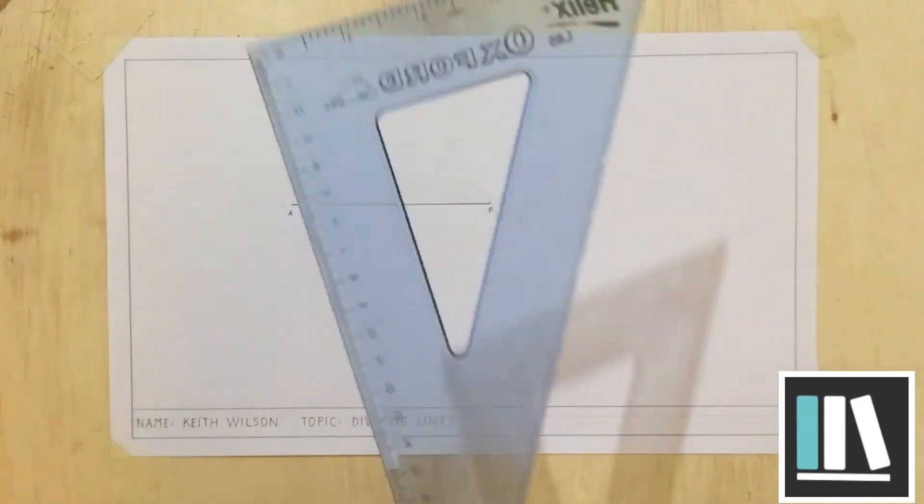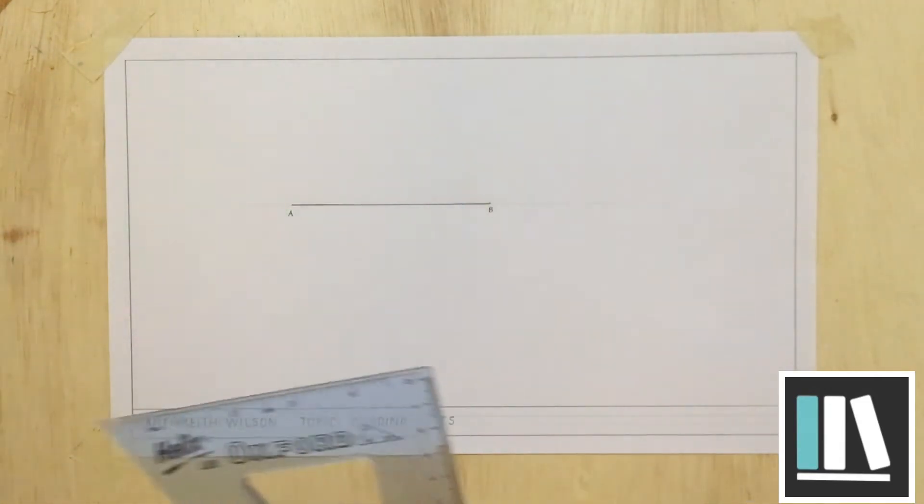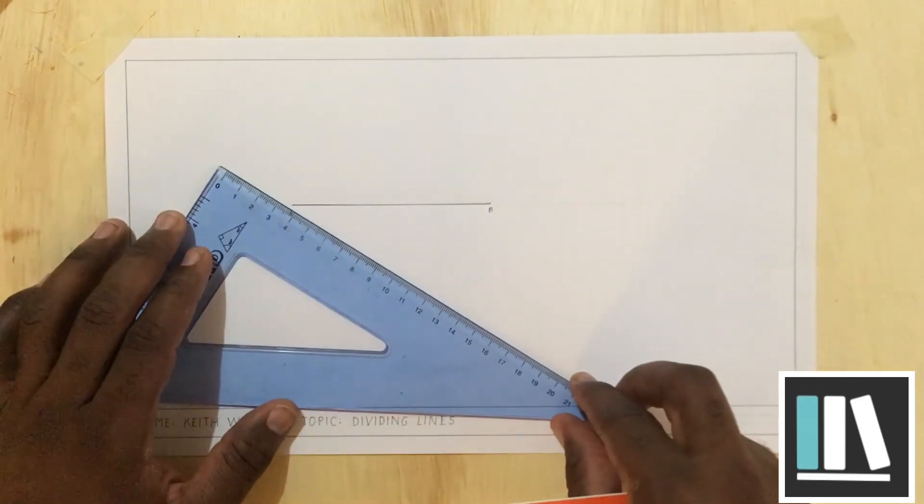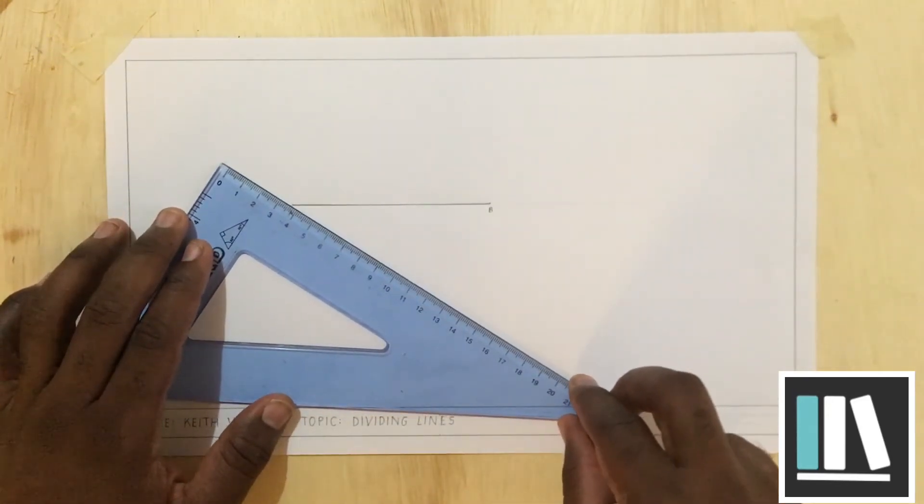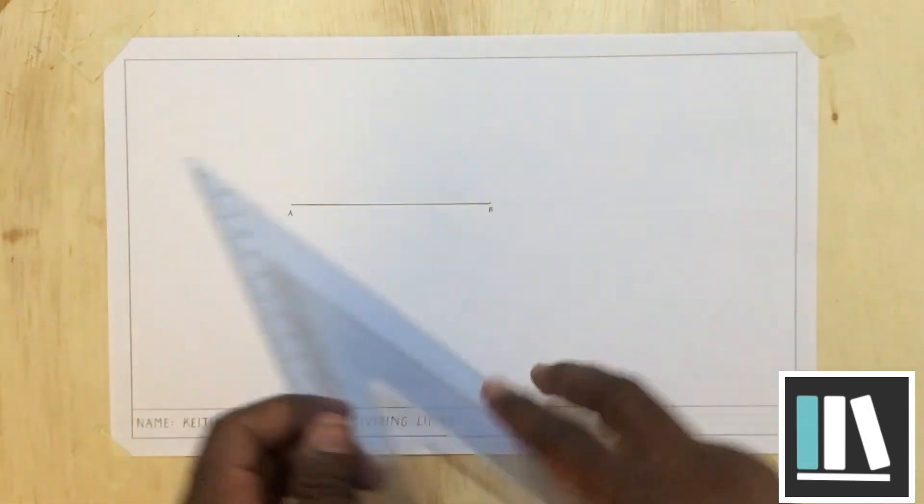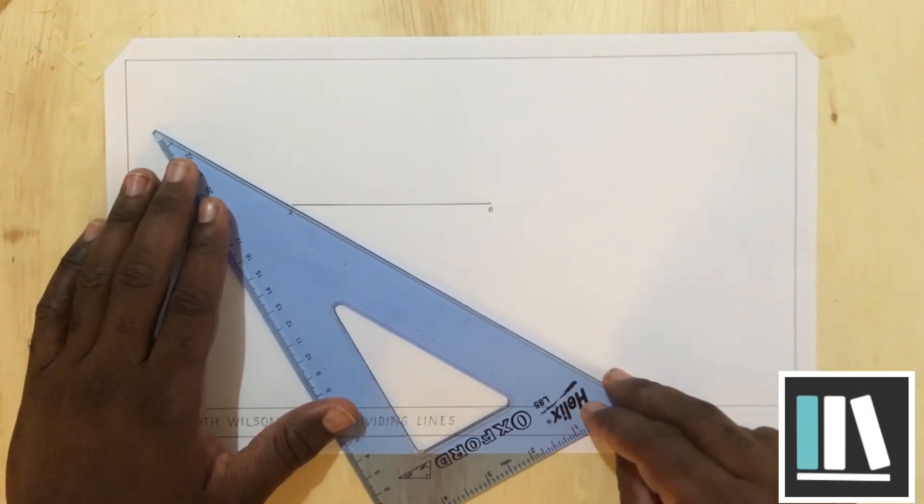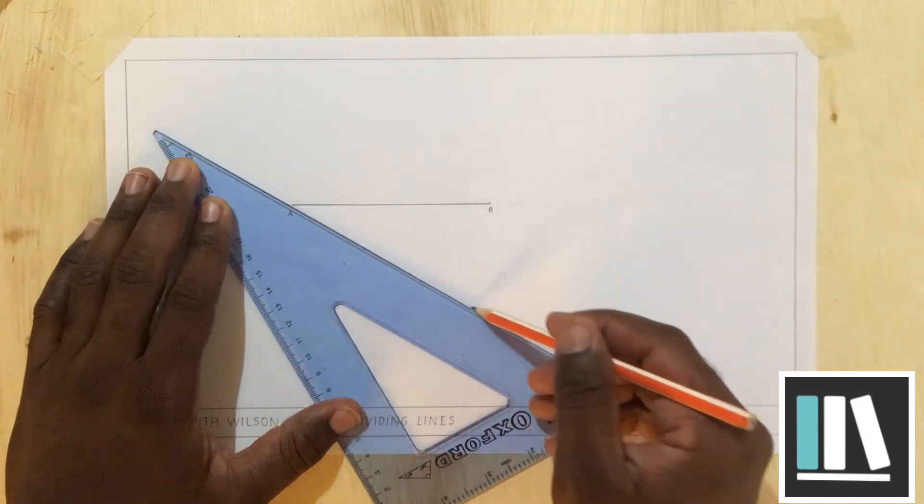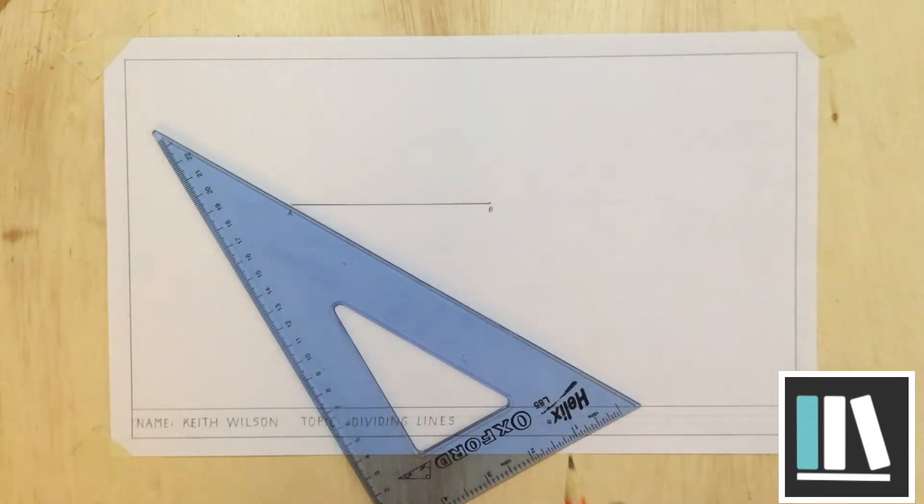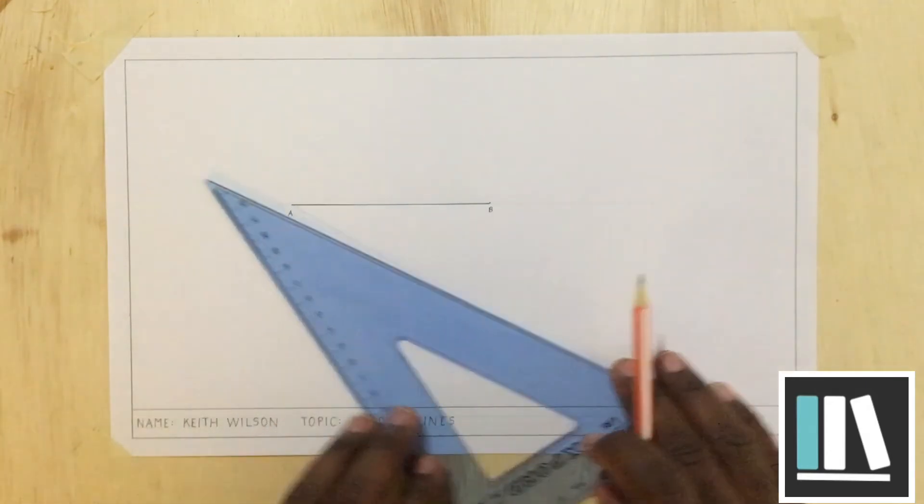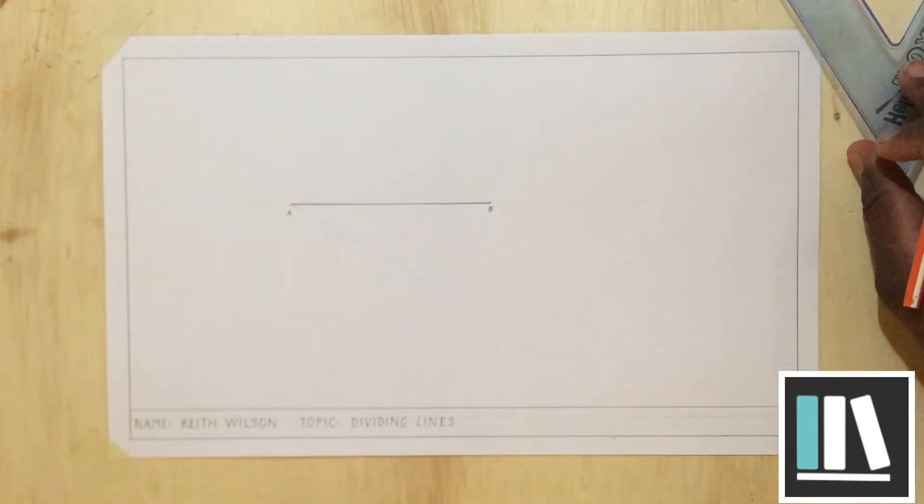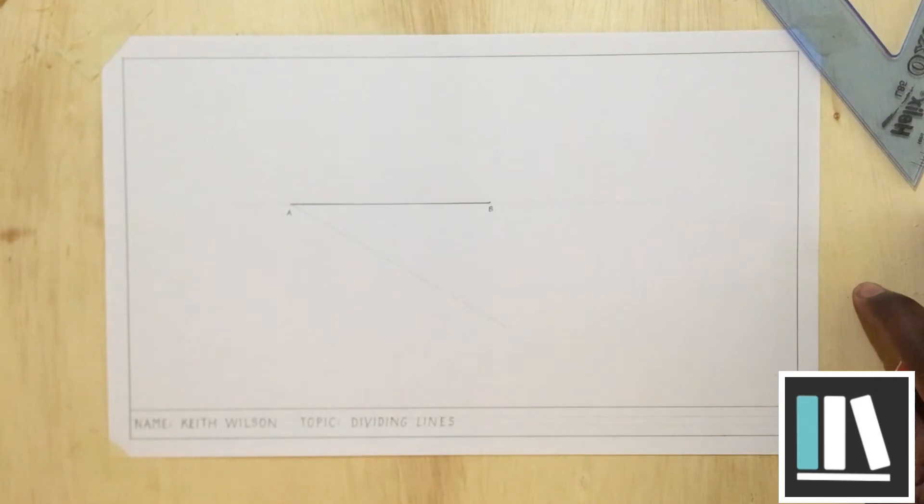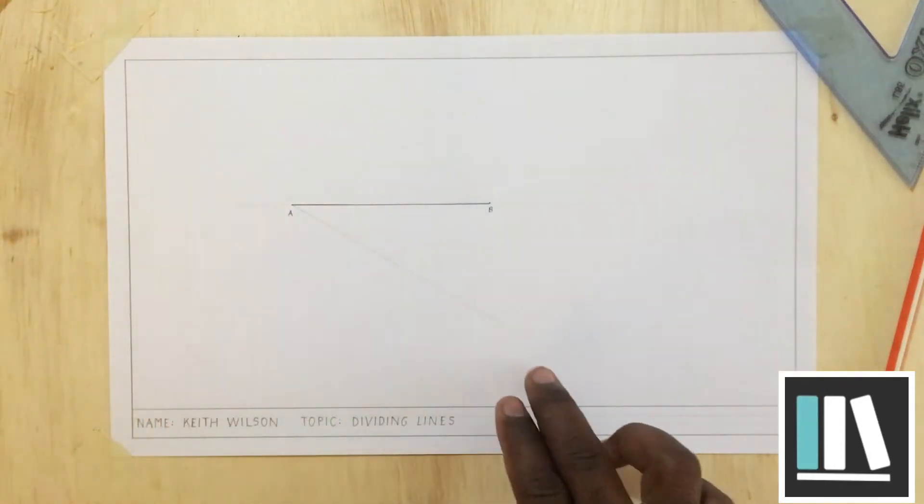I'm going to take my set square. Now, for this exercise, you can use any set square to do what I'm about to do. From point A, I am going to draw a line, a diagonal line. I'm going to set it at a convenient angle. Please note, at this point, I am not using the set square with the T square. I'm using it independently. Normally, when we use our set squares, we use it with the T square. But in this particular exercise, I will refrain from doing so, as it is not necessary.